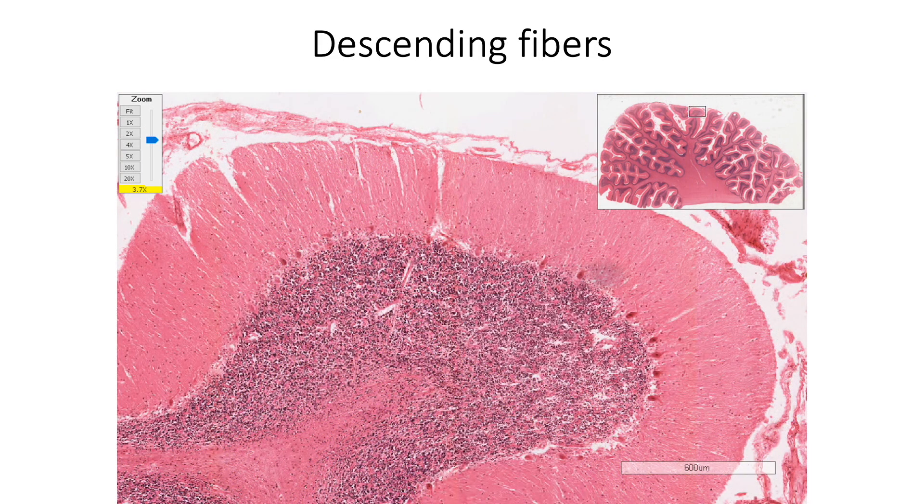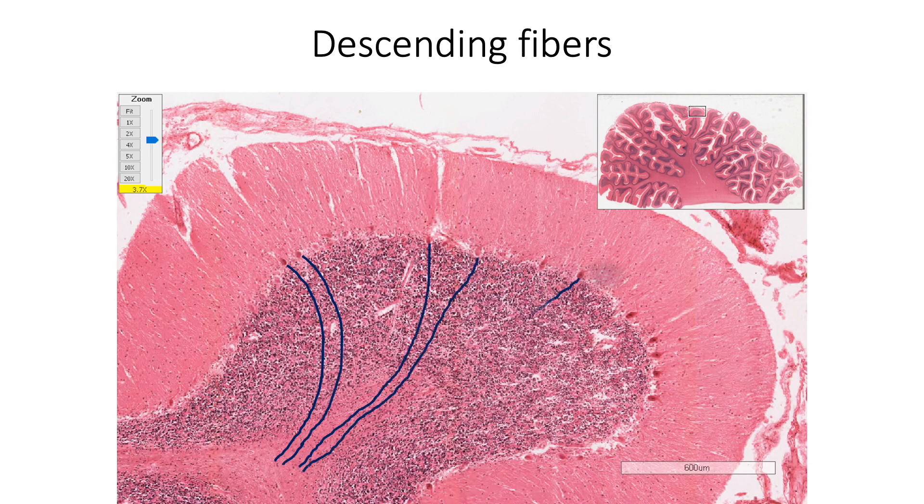Descending fibers in the white matter are the axons of Purkinje cells which are the only cells carrying output signal from cortex. Most of these terminate in the intracerebellar nuclei whereas, few fibers terminate directly in the vestibular nuclei.